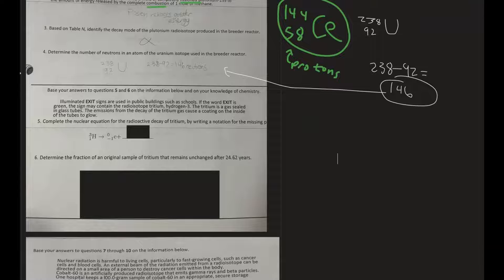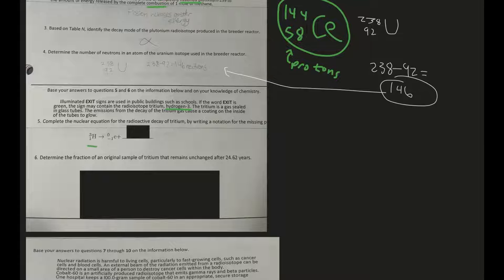Number five: complete the nuclear equation for the radioactive decay of tritium by writing a notation for the missing part. Tritium is also known as hydrogen-3 — good to know. They list it right here. It's a balance of mass and charge.